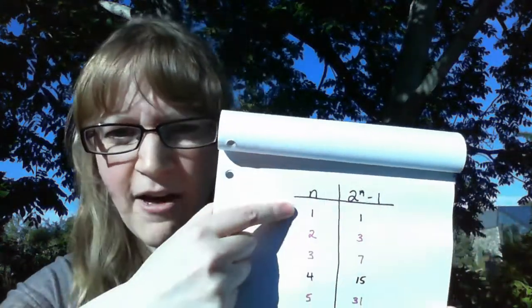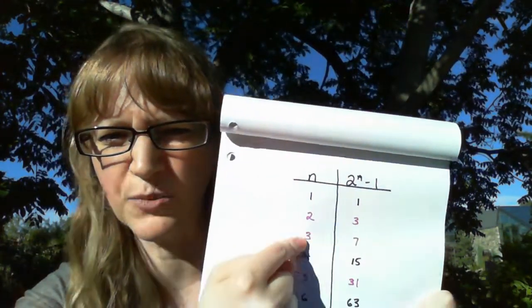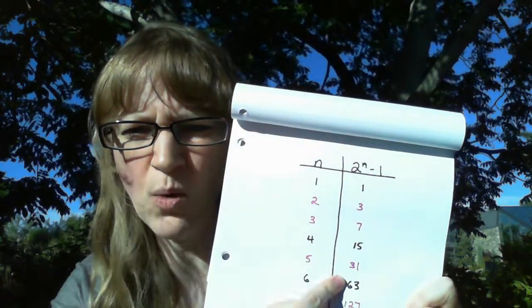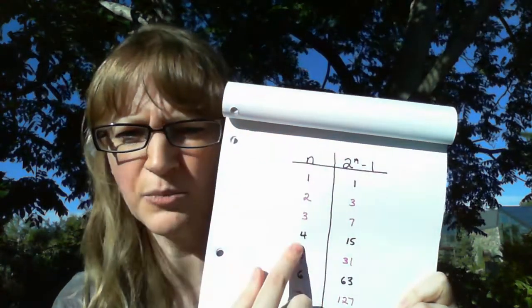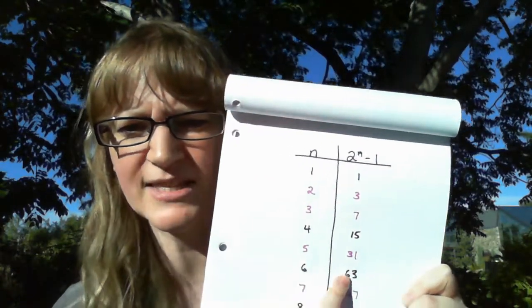For quite a while, humanity saw a pattern that if we have n is prime, then 2 to the power of n minus 1 is prime. And this pattern holds for quite a while. If n is not prime, then this thing also is not prime. But when n is prime, it seems to hold.